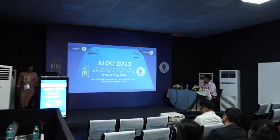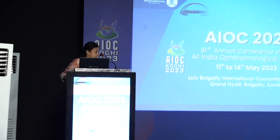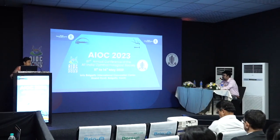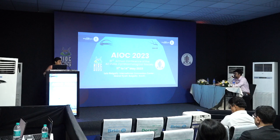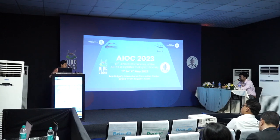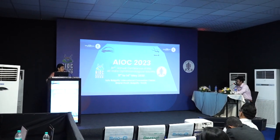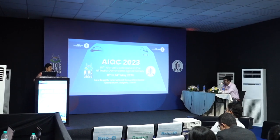Moderator: Why did you have the doubt of retrobulbar neuritis when extraocular movements were involved? Speaker: Because he had a painful loss of vision and the vision drop was significant. Typically in retrobulbar neuritis you don't expect ocular movements or other cranial nerves to be involved. So primarily, if the movement abnormality was not there, RBN would definitely have been a strong suspicion. Moderator: What was the first scan done — CT or MRI? Speaker: MRI was done first and it was normal. Then the second MRI with enhancement turned out to be positive.